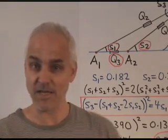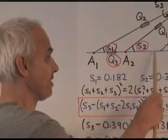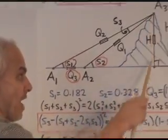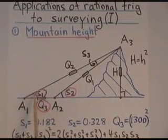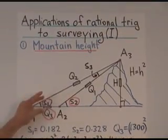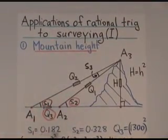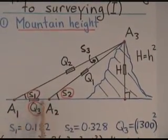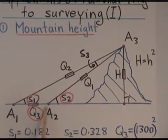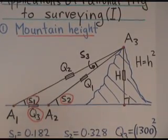The first problem we'll consider is the height of a mountain. There's the mountain. We'd like to know how high it is. We're here and here. We take two spread measurements, S1 and S2. We assume that these are these two values here. We also know this distance here is 1300, so the corresponding quadrants is 1300 squared.